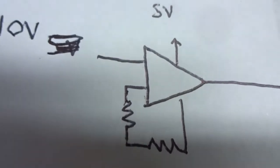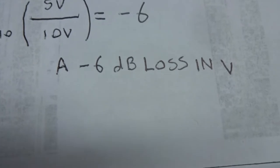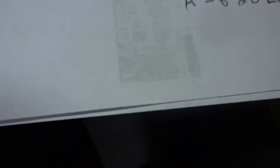When you configure an operational amplifier this way, your decibel gain, measured in dBs, will be negative 6. And that is a decibel loss in voltage.